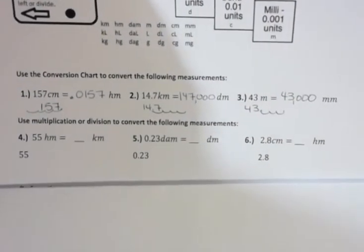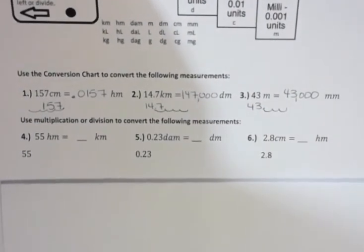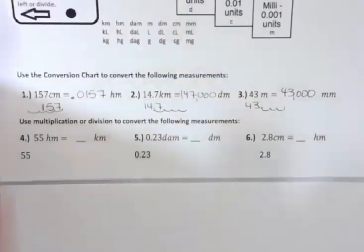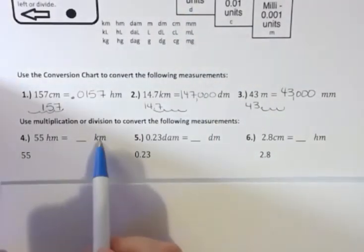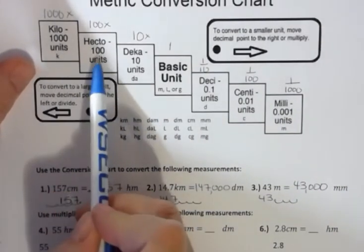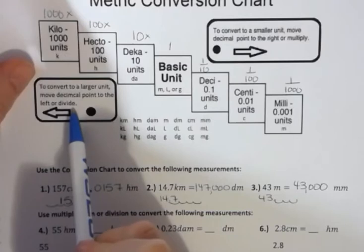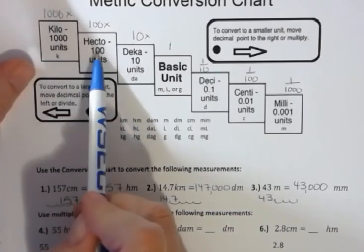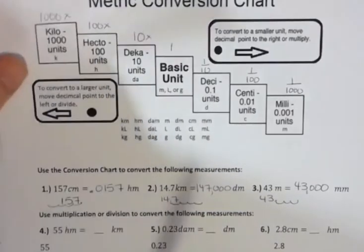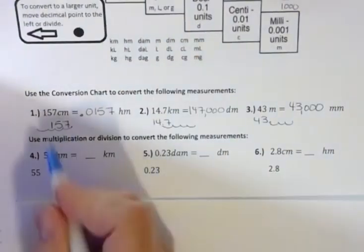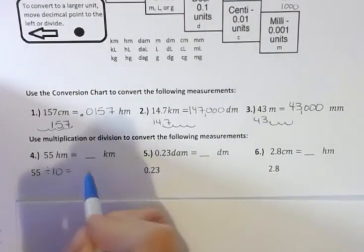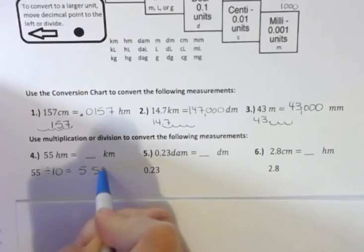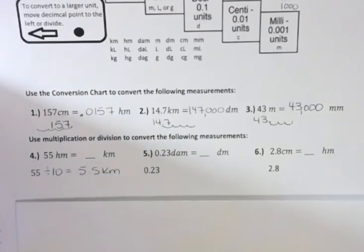Now let's convert by multiplying or dividing instead of using the chart. If I have 55 hectometers and want to change to kilometers, that's one place to the left, so I divide by ten. 55 divided by 10 equals 5.5 kilometers. Every time you move one place left, divide by ten; two places, divide by a hundred; three places, divide by a thousand, and so forth.